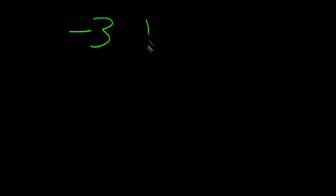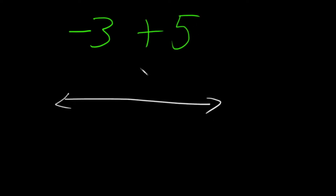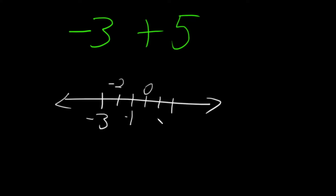What if we start with a negative number? This time we have negative 3 plus 5. We'll use another number line and start with negative 3. Since we're adding a positive 5, we're going to move to the right. Going 1, 2, 3, 4, 5 steps, and counting up from negative 3 through negative 2, negative 1, 0, 1, 2 — we end up at positive 2.